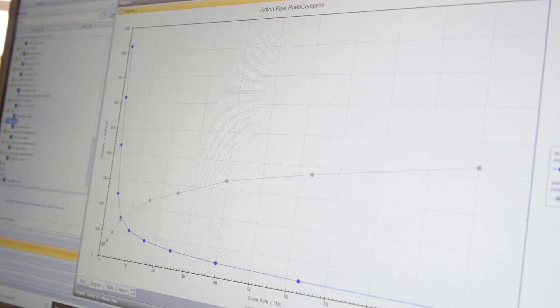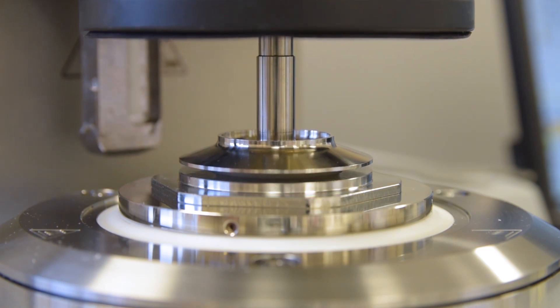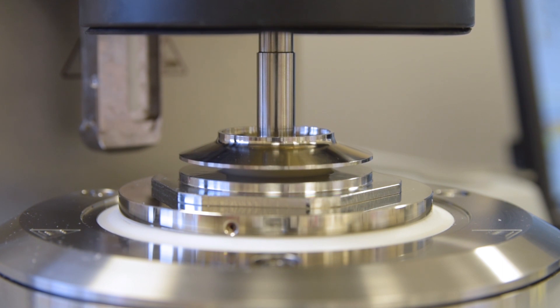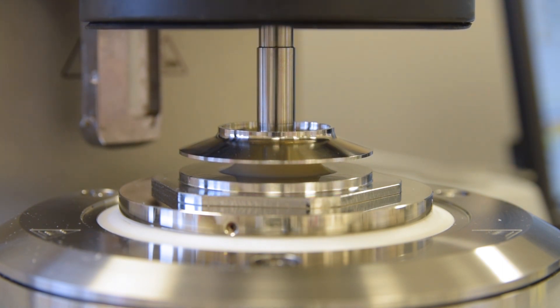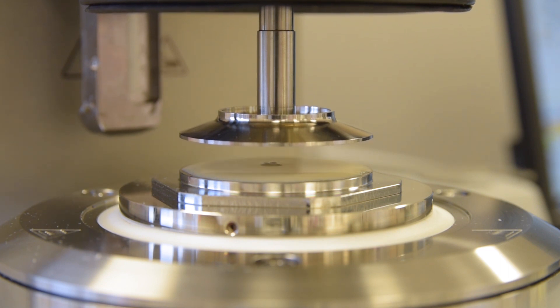It can also be observed at a smaller, more practical level. For example, when you try and pour ketchup out of a bottle, but you have to shake it first, this is shear thinning. Or you may have seen people running across the top of a pool of custard. This is shear thickening.